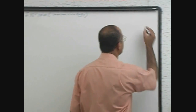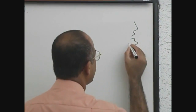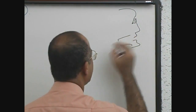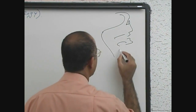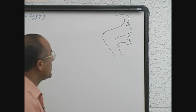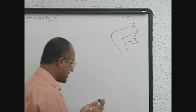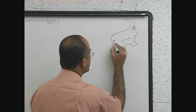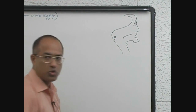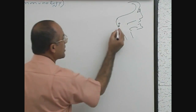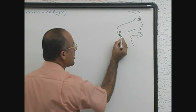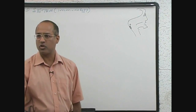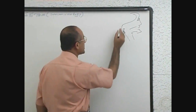Let's start the story. Suppose a bacteria comes here — this is a bacteria — and this bacteria attaches with the mucosa and then starts multiplying. They start multiplying and this bacteria starts releasing its toxins and damaging the underlying tissue.